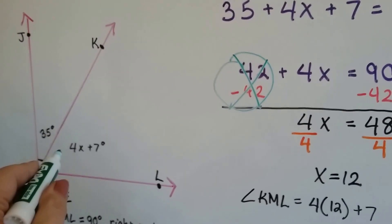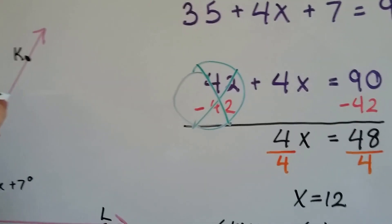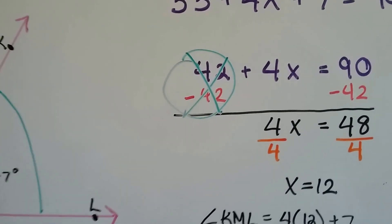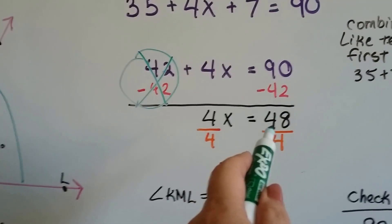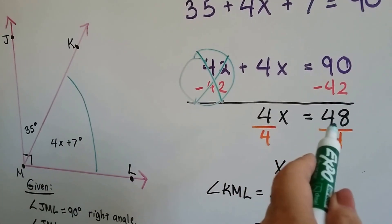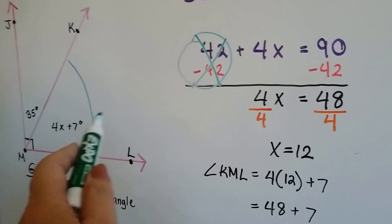Well, it said 4X plus 7 is the measure for this angle right here. So we can already kind of figure out that if 4X is equal to 48, we could just add 7, couldn't we? It would be 55.